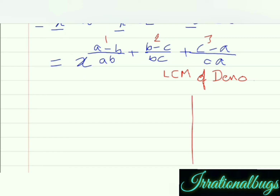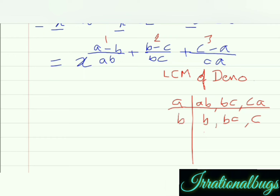इन cases में नहीं आता हैं, तो prime factorization वाले method से हम LCM निकालते हैं — ab, bc and ca का. पहले a से try करते हैं: ab में a है, bc में a नहीं है so as it is, and ca में a है. Next b से try कर रहे हैं: b one time in ab, bc में b है, c as it is. Last c से कर रहे हैं: bc में c one time, ca में c one time. So a into b into c is our LCM.